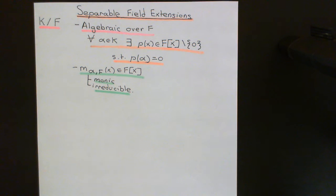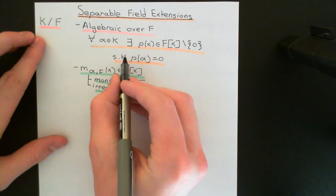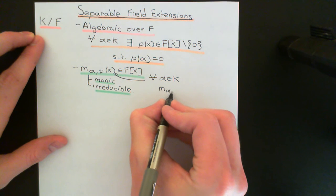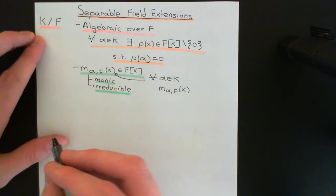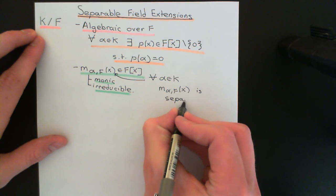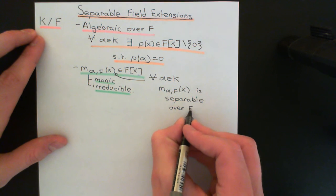So for all elements in this field extension K of F, which is an algebraic field extension of F, they will have a minimal polynomial in the ring of polynomials over F. Now, if this is going to be a separable field extension, we are going to insist that these minimal polynomials for every single element in the larger field K must be separable. So for all alpha in K, the minimal polynomial for alpha over F — which we know exists because we are assuming criterion one is satisfied, i.e. that K is an algebraic field extension of F — must be separable over F.